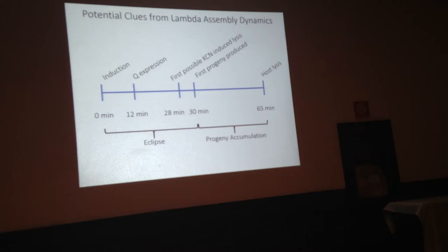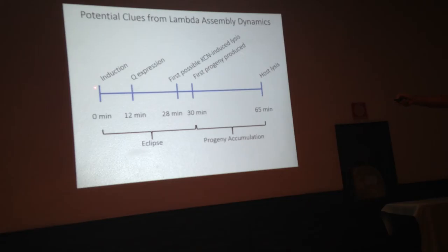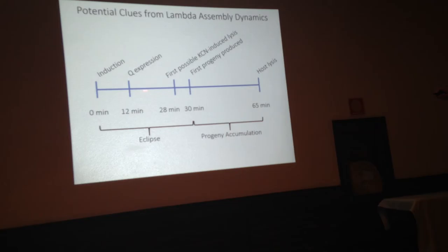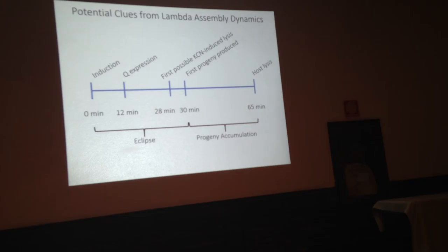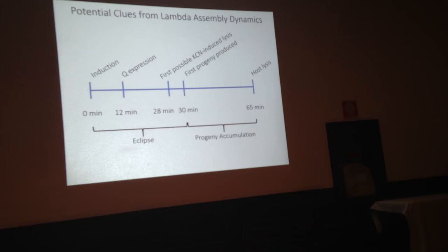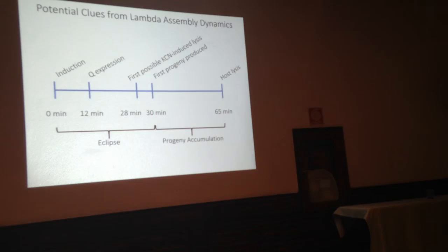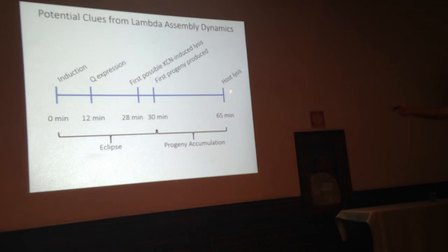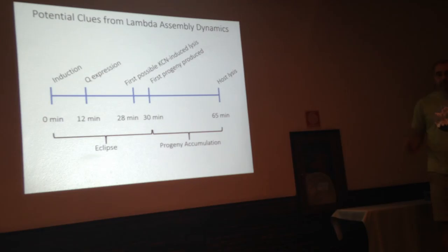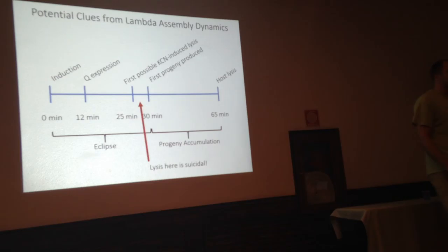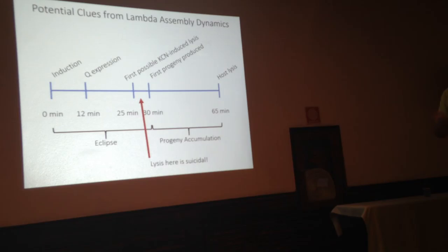Bacteriophages are the most resource-efficient of all organisms. The wild phage has this dual-start lysis system. Maybe it has something to do with the bacteriophage assembly dynamics. The phage exits the genome, transcription is initiated, and we can first lyse the cell with an energy poison around 20 minutes — meaning the holin has reached the concentration sufficient to lyse the cell. The first progeny are only seen at about 30 minutes, and at 65 minutes we have lysis after the progeny have accumulated. The key point is that if the cell should lyse any time in the early period, it would kill the bacteriophage without leaving any progeny — it would have been suicidal.